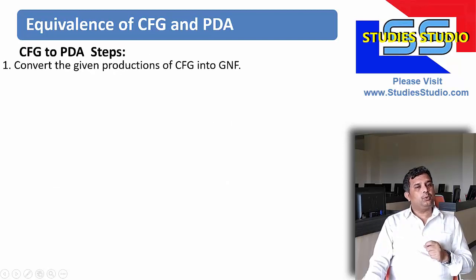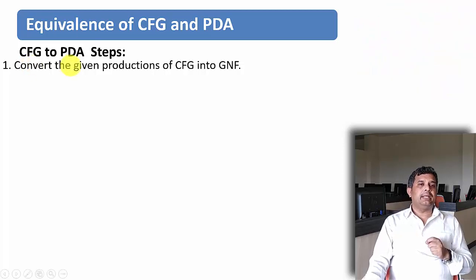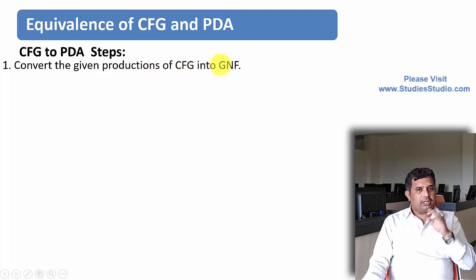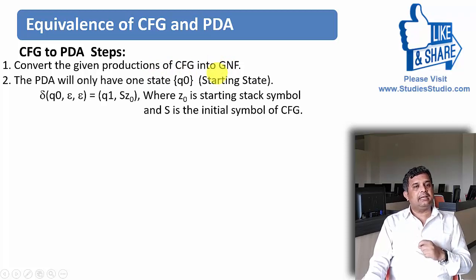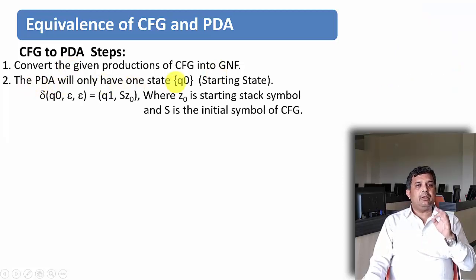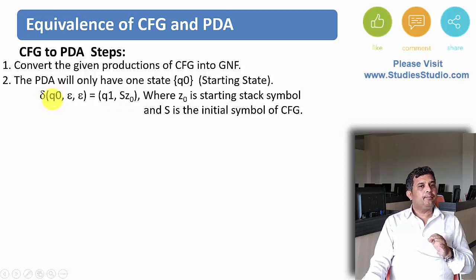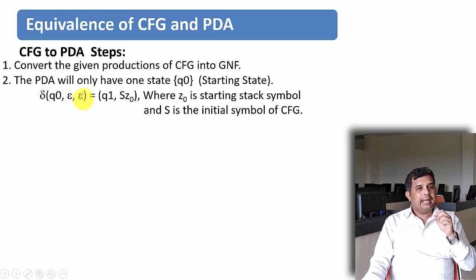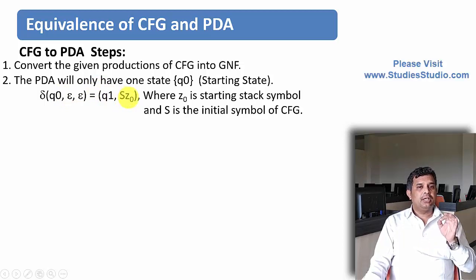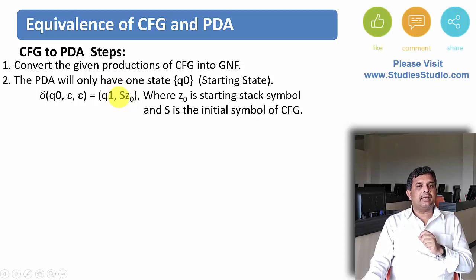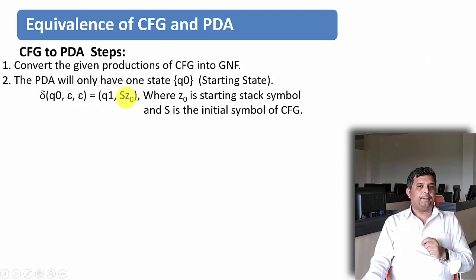Now let us see the steps that we are going to adopt in order to convert a context-free grammar to pushdown automata. The first step is we need to convert the given production of context-free grammar into Greibach Normal Form or GNF. The next step is the PDA will only have one state at the beginning — let it be Q0. The transition that I will perform is: Delta of Q0, Epsilon, Epsilon equals Q1, S, Z0. It means Q0 is the initial state, Epsilon is the input symbol, and the second Epsilon is the stack symbol. If this is the situation, I will go to Q1 and push S and Z0, meaning S will be on top of the stack. This S is the starting symbol of the context-free grammar.